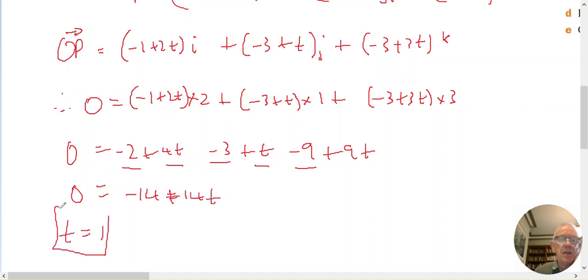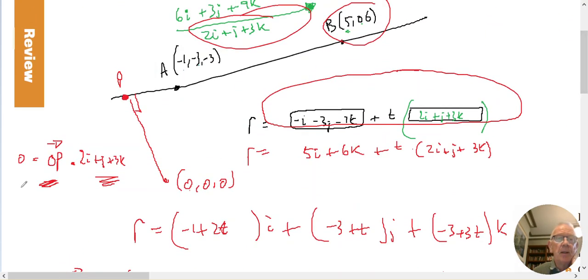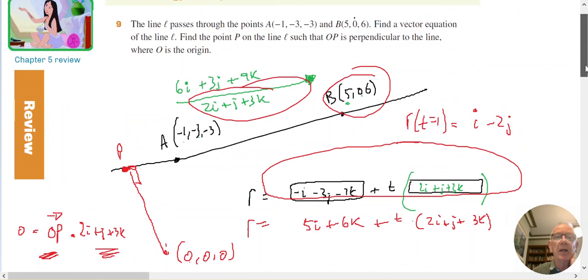So when T equals 1, that will give me the vector O to P along this line where it's going to be at right angle. So if T equals 1, so R of T equaling 1 is going to equal negative 1 plus 2 is going to be I. Minus 3 plus 1 is minus 2J and minus 3 plus 3 is 0K. And that's the location.